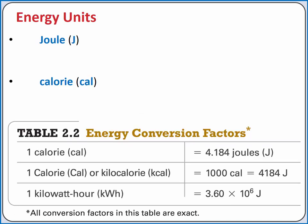The joule is the SI unit for energy. One joule is also one kilogram meter squared per second squared. But there are also other common units for energy. A calorie with a lowercase c is the amount of energy required to raise the temperature of one gram of water by one degree Celsius. A capital C calorie is equal to 1,000 lowercase c calories and is the type of calorie represented on a nutritional label in the United States. The nutritional labels of many other countries use kilojoules.